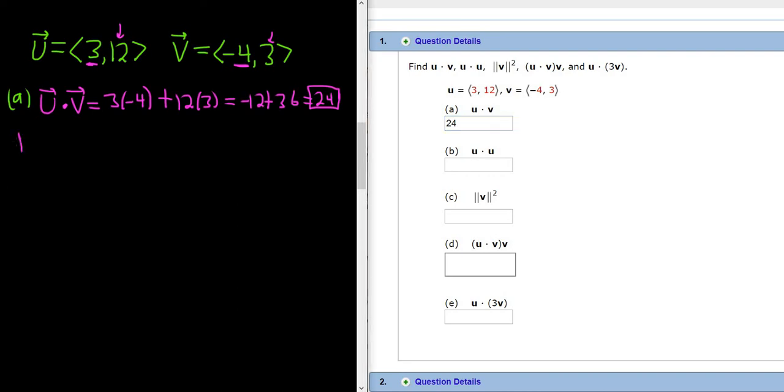Part b, we have to compute the dot product of u with itself. So u dot u. This is just going to be 3 times 3. Let me write it up here again so you see it. You're basically just multiplying the components.